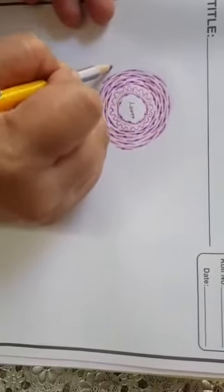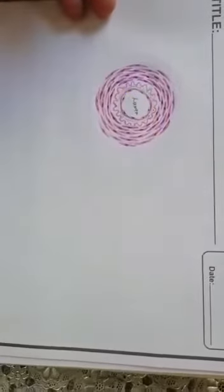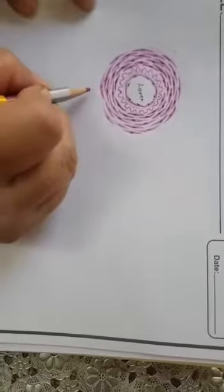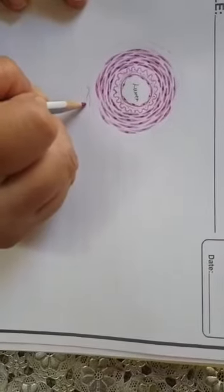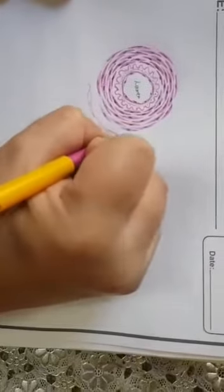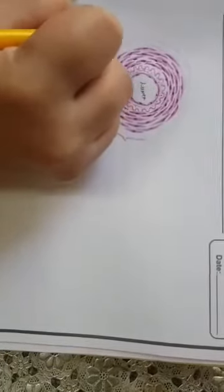Then tunica media is separated from tunica adventitia by this network of elastic lamina forming the external elastic lamina, which is also very prominent.